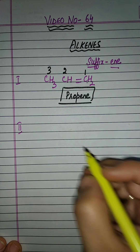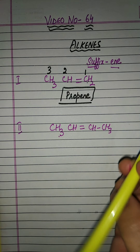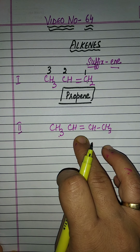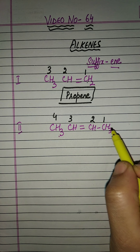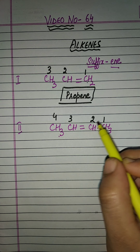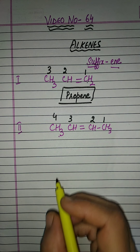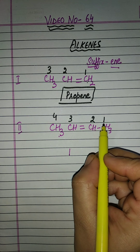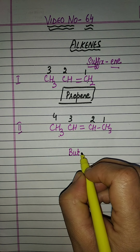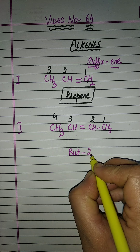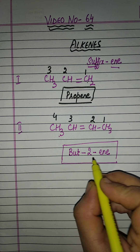Now let's take another example. Suppose the compound is CH₃CH=CHCH₃. In this case, we can start numbering from either side because the position of the double bond comes out as 2 either way: 1, 2, 3, 4. When the double bond is present at position number 2 or higher, we have to specify the position. The word root is 'bute' as it contains 4 carbon atoms. So we write 'bute-2-ene', and it is compulsory to write the dashes as they specify the position of the double bond.